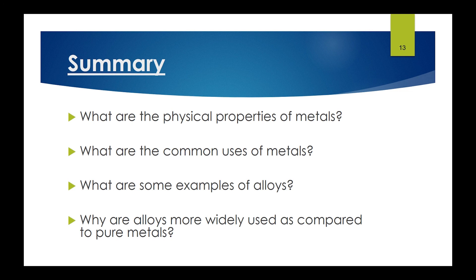In summary, the four key questions covered are: the physical properties of metals and how to link them to metallic structure; the common uses of metals; examples of alloys; and why alloys are more widely used than pure metals. This is the end of the content for combined science students. Pure chemistry students should continue watching for additional learning objectives.